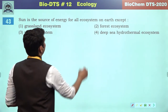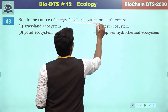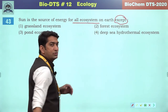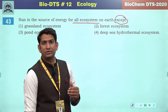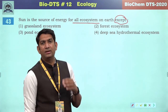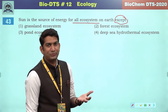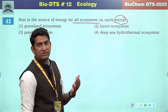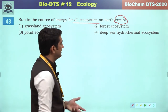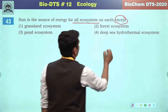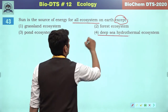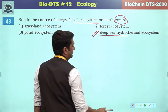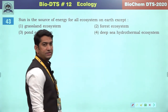The sun is the source of energy for all ecosystems on earth except — deep sea hydrothermal vents at more than 500 meters depth have organisms that do not rely on solar energy as their source. So the correct answer will be option four.